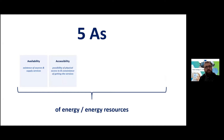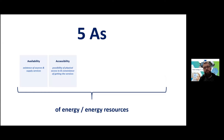Accessibility is the possibility of physical access to and convenience of getting energy services — in other words, that final customers do have access to services and to the sources of energy. The opposite of accessibility is energy poverty: the situation where the customer does not have enough energy or does not have access to energy sources.